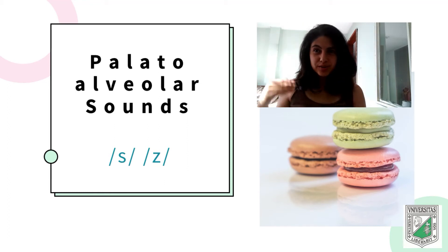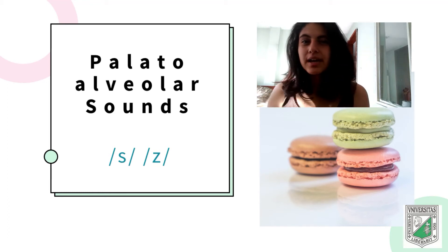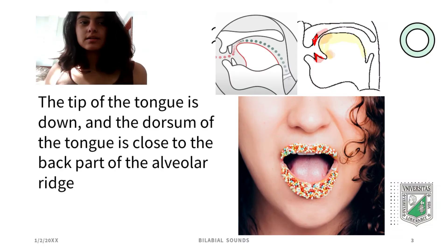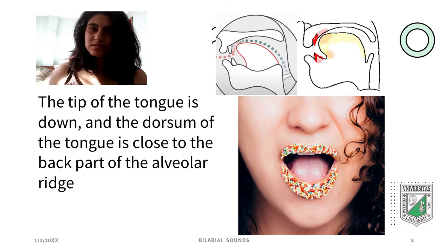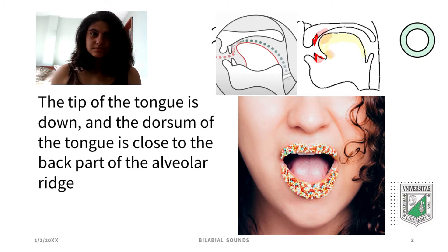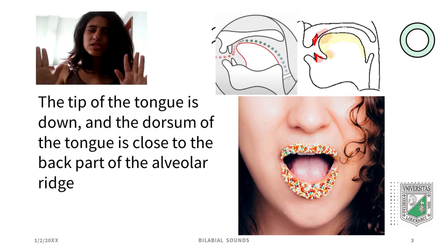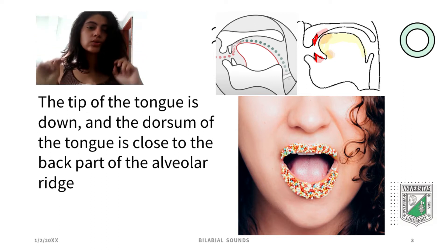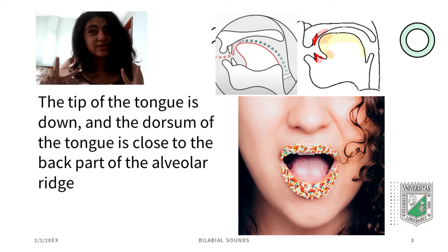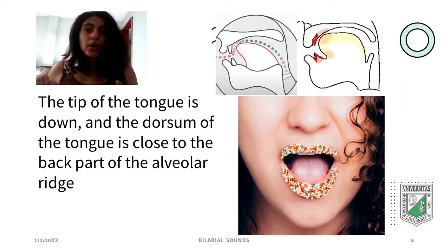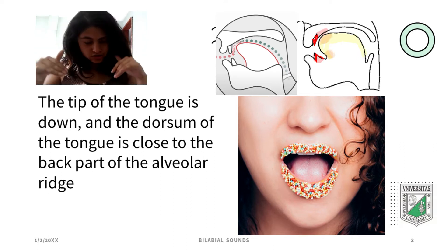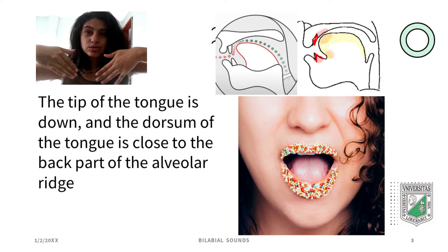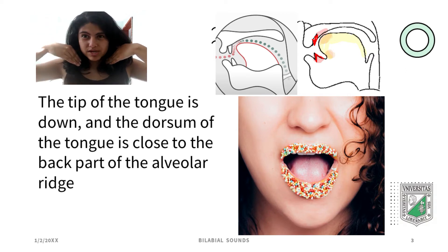Hello, today we are going to talk about the palato-alveolar sound. What are the palato-alveolar sounds? Palato-alveolar sounds are consonants produced by forcing air through a narrow channel formed by placing two articulators together. This occurs when the tip of the tongue is down and the dorsum of the tongue is close to the back of the alveolar ridge.